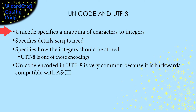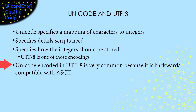The bottom line is that Unicode specifies a mapping of characters to integers that covers many languages. In addition, it allows you to specify details of the scripts, like the direction that the text should go or how characters get combined in particular languages. Because it has integers, we have to talk about how it is going to store those integers. One of the ways that Unicode can choose to store integers is with a UTF-8 encoding. Unicode encoded with UTF-8 encoding is very common because it is backwards compatible with ASCII.